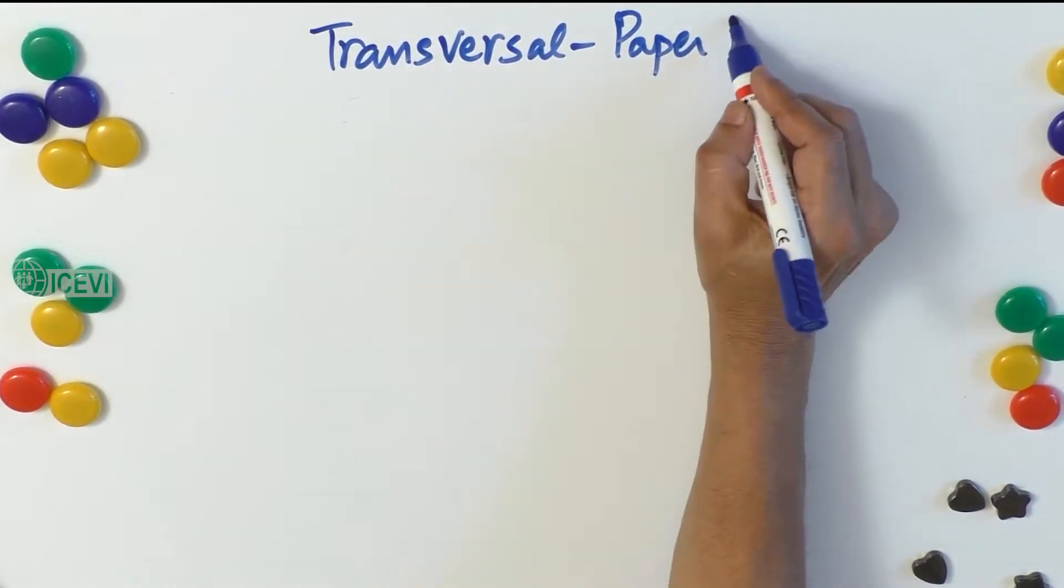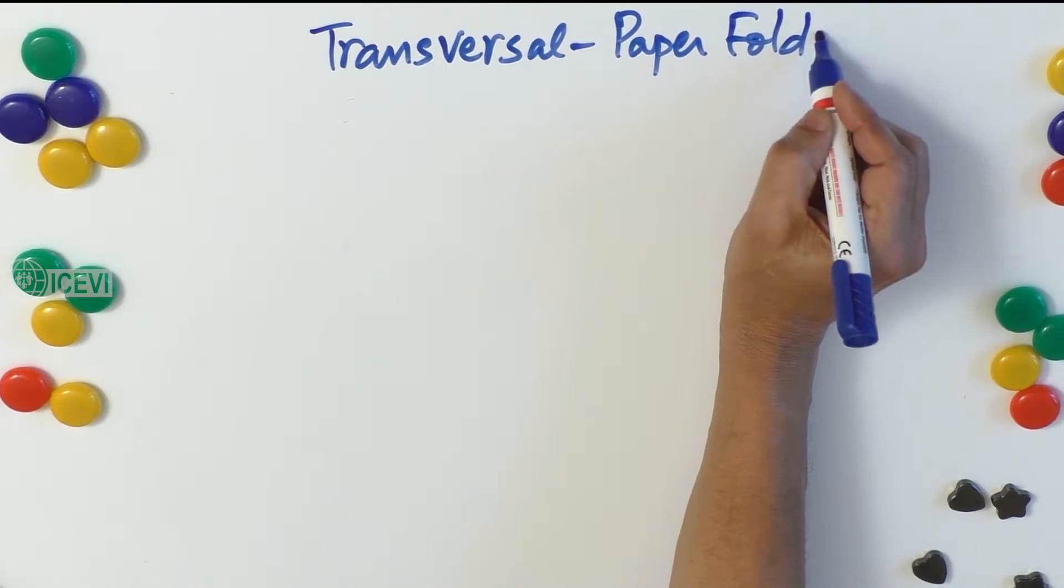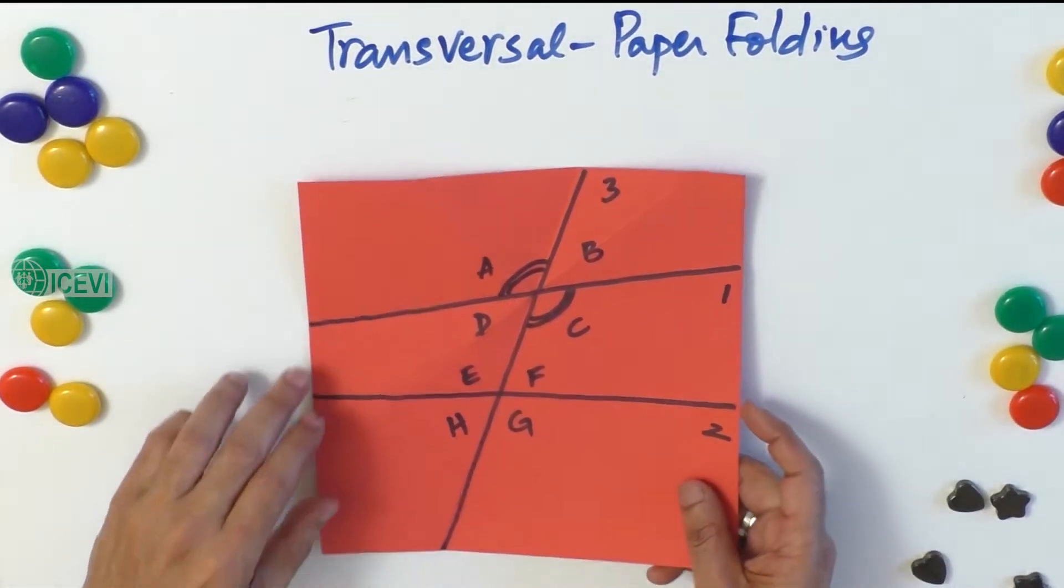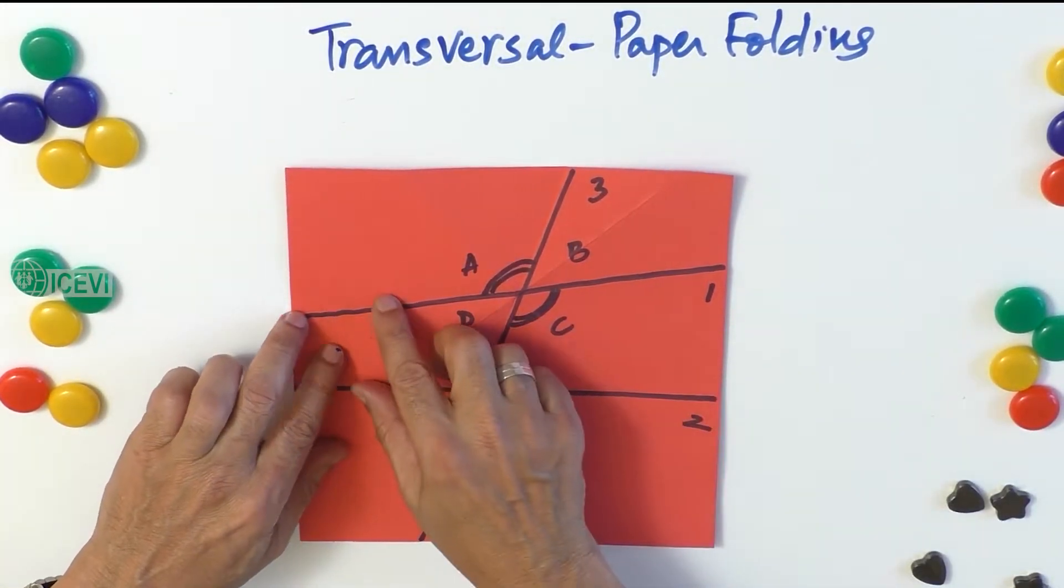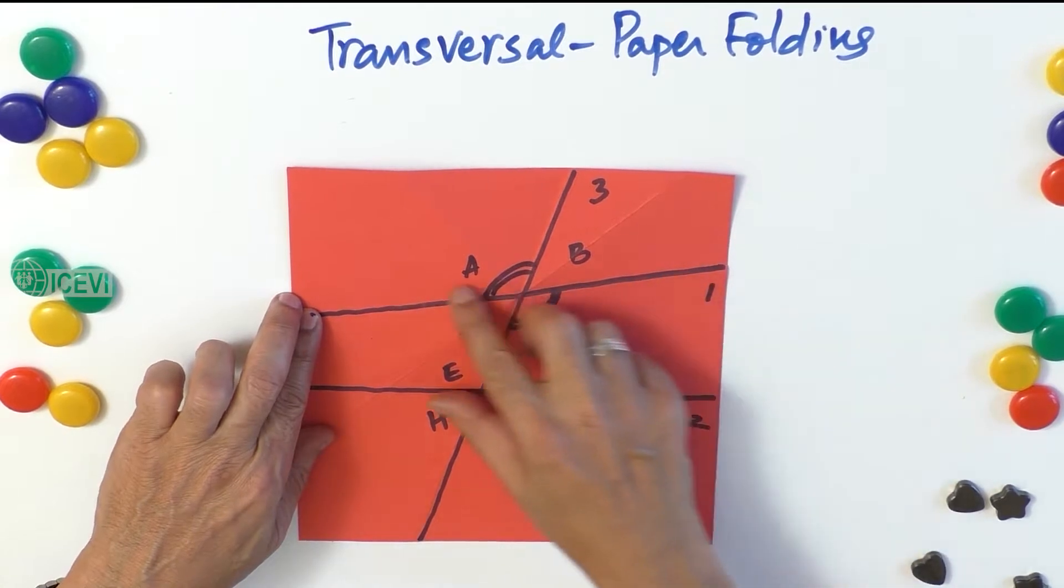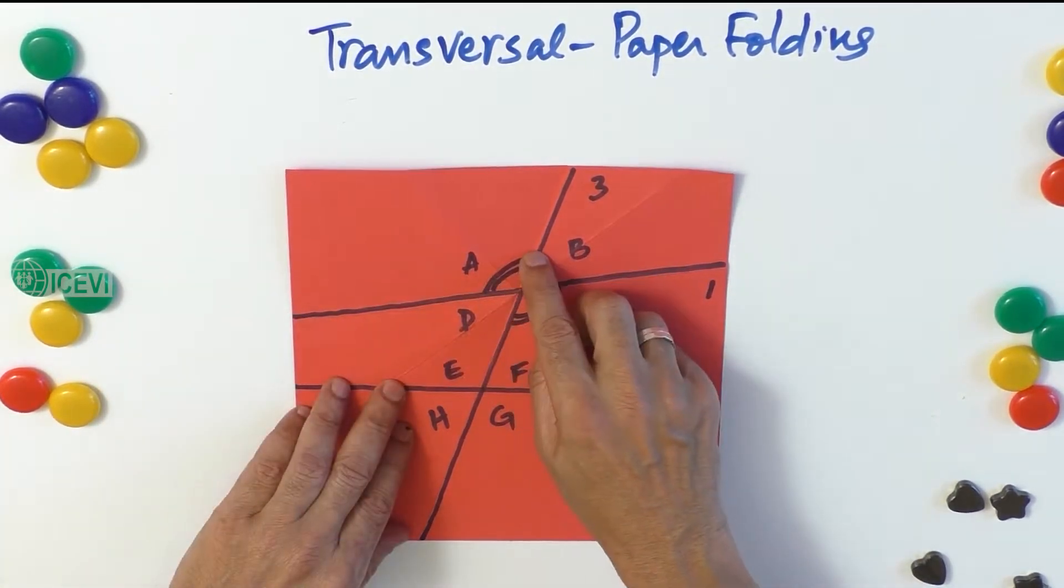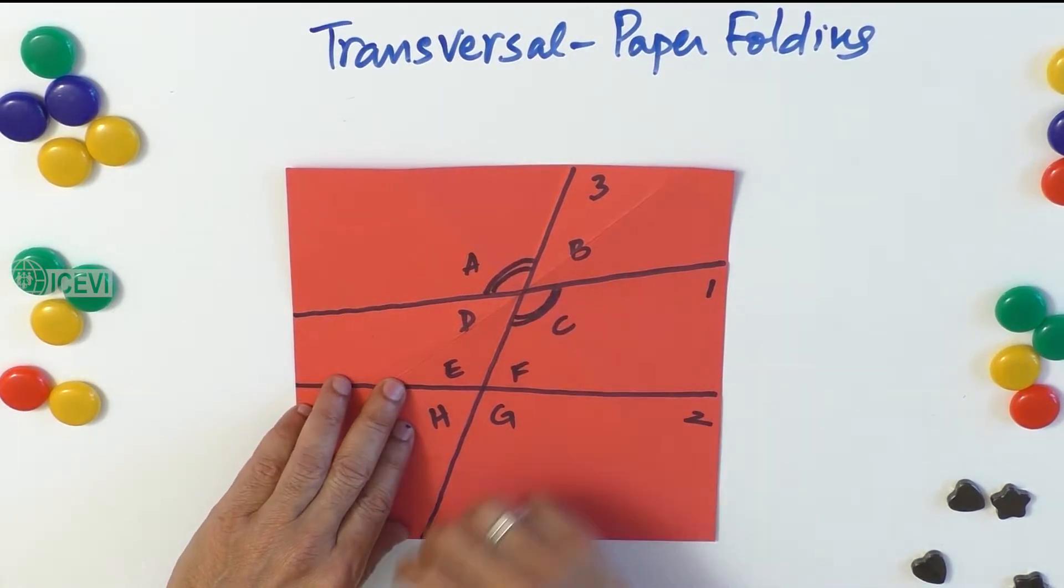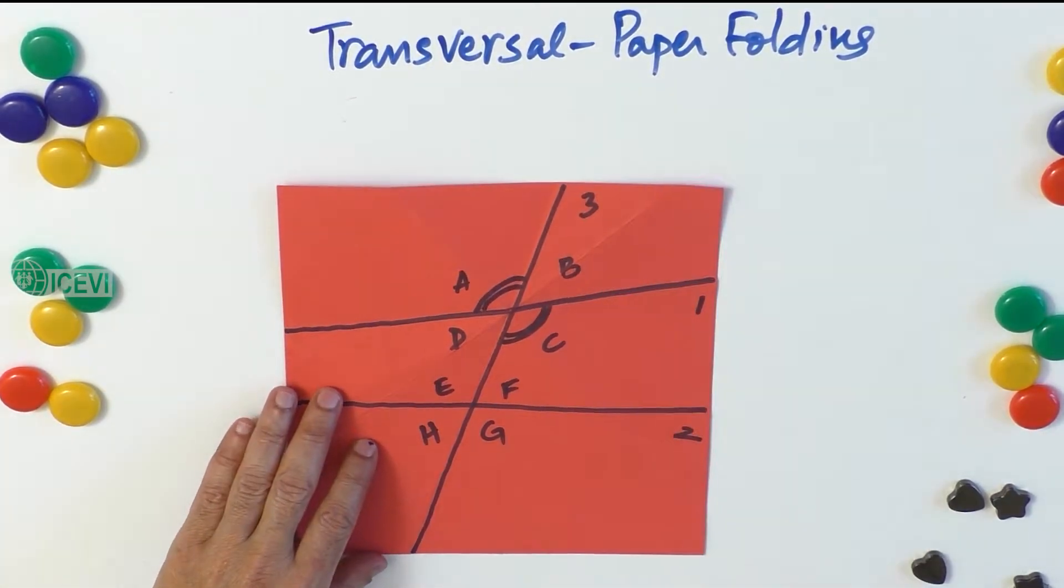We had already taken up an example of the transversal and paper folding in the case of the two lines not being parallel. We had proved how the vertically opposite angles are equal.